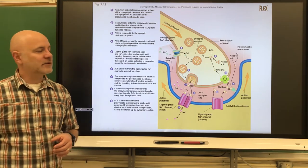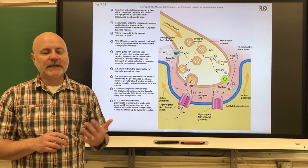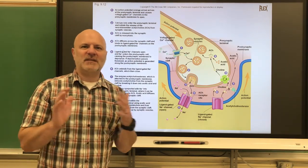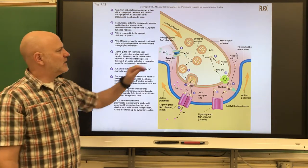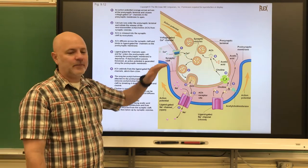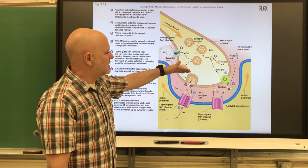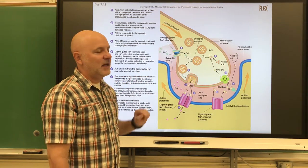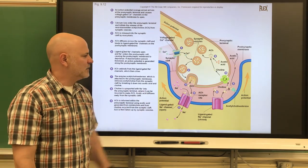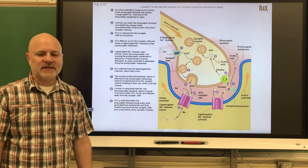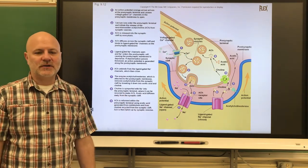Let's look at the behavior of skeletal muscles. The first part is excitation — the process in which action potentials in the nerve fiber lead to action potentials on a muscle fiber. When an action potential reaches the end of an axon, it causes calcium ion channels to open, allowing calcium to diffuse into the end of that axon. Those calcium ions stimulate the release of acetylcholine into the synaptic cleft, which diffuses across and binds to acetylcholine receptors on the sarcolemma, allowing sodium to diffuse in and starting an action potential on the muscle cell.